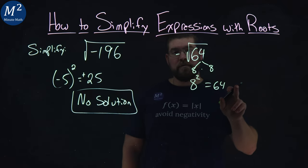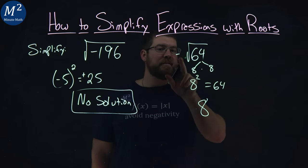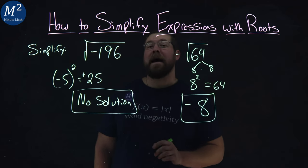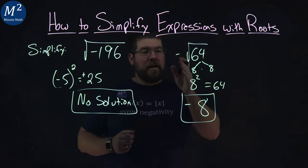Since 8 squared is equal to 64, the square root of 64 is 8, but then we still need that negative sign out front. Keep that negative sign right there, and there we have it. Again, we have negative 8 as the answer for the second part, negative square root of 64.